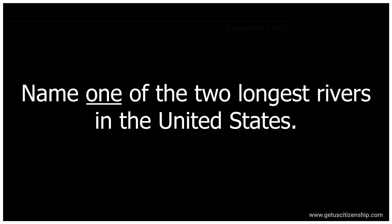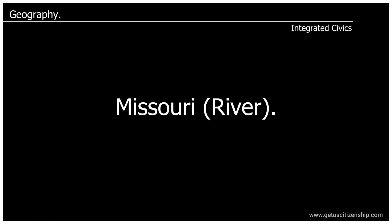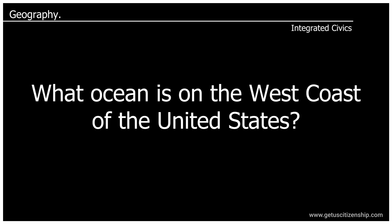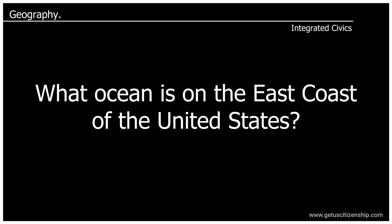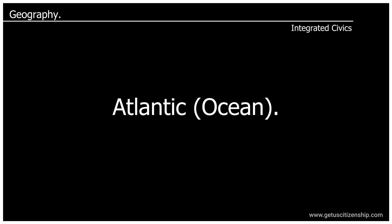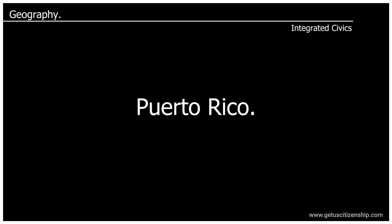Name one of the two longest rivers in the United States. Missouri River. What ocean is on the west coast of the United States? Pacific Ocean. What ocean is on the east coast of the United States? Atlantic Ocean. Name one U.S. territory. Puerto Rico.